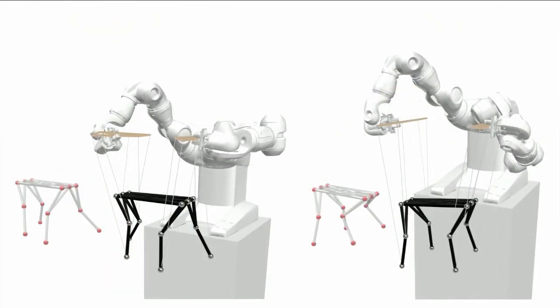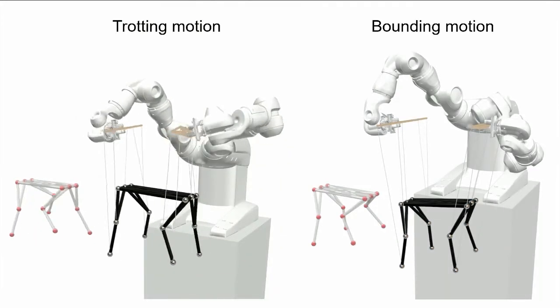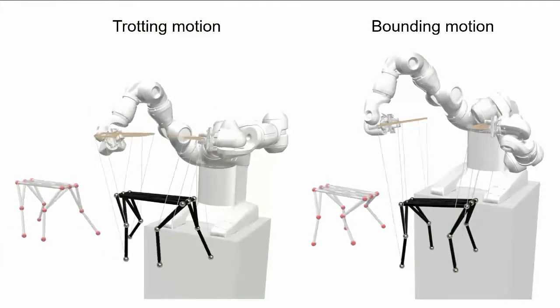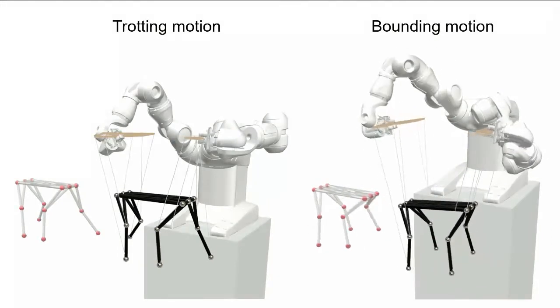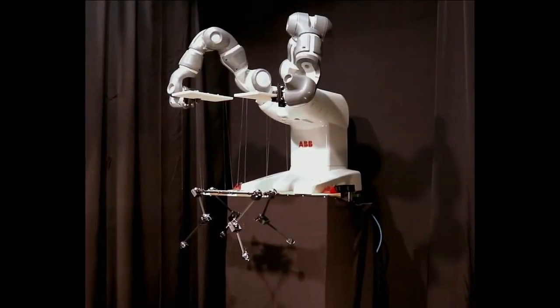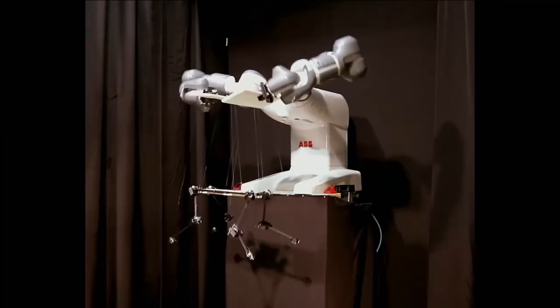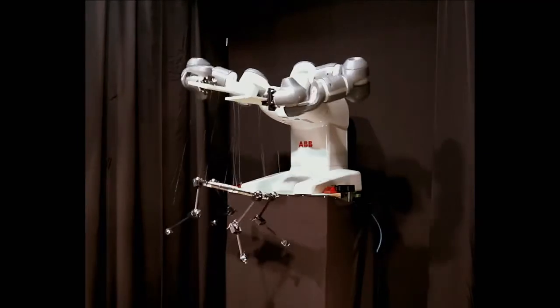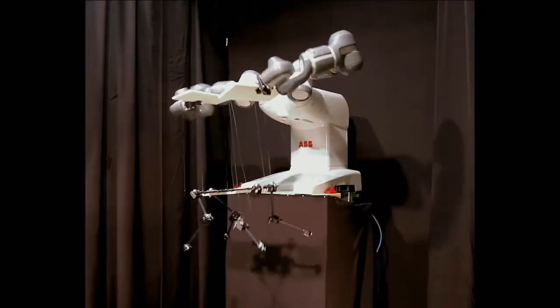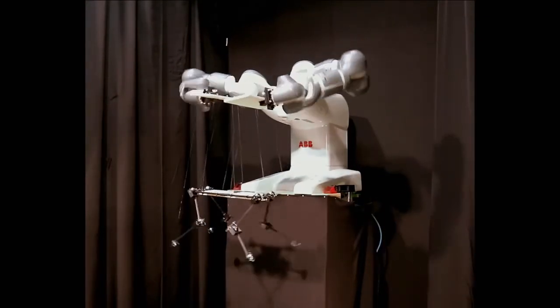The last example I would like to show you is a puppy. And here we designed two different target trajectories for the same design. One of them is a trotting motion. And the other one, a bounding motion. Now we've also run experiments with its physical counterpart. Here you can see the example where it performs a bounding motion. Now this is the largest physical system we run experiments with. And here we experienced some limitations.